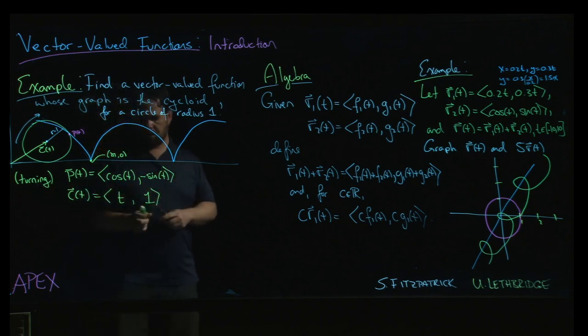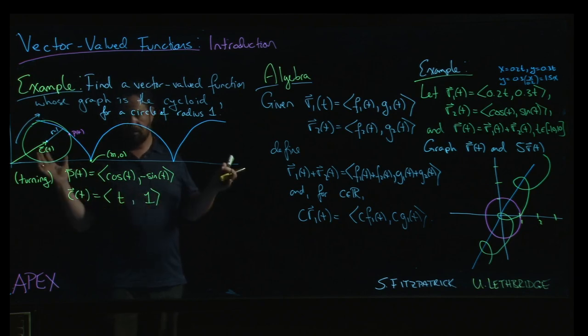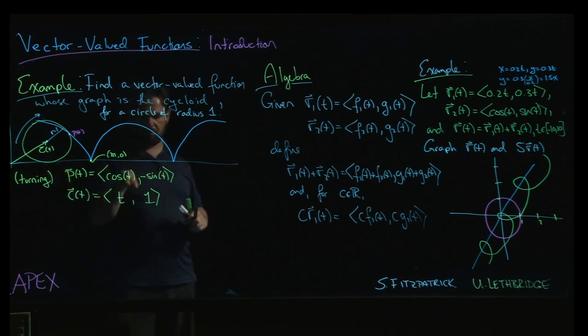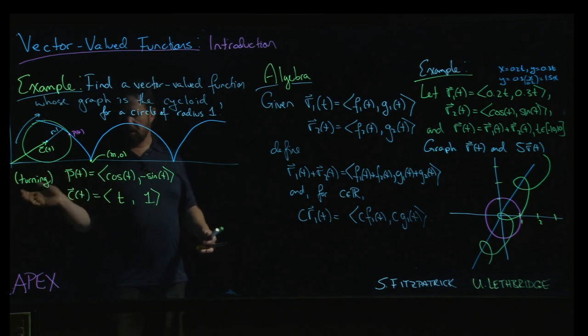Now, that might change if, well, there's a couple of things that could change. One is we could change how fast the circle is rolling, which would involve maybe putting some common scale factor in there, like doing 2t instead of t. It would speed up how fast the circle is going. Right? Then we would get to this point 2π, 0, but we get there in a time of just π, and then we need to multiply by 2.